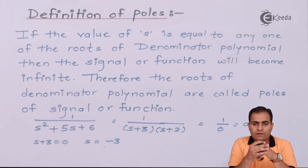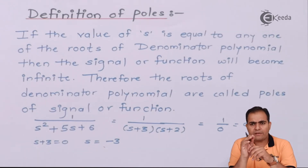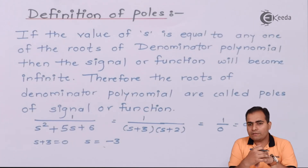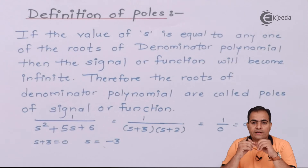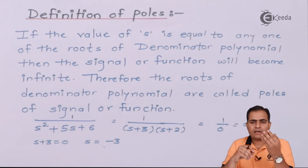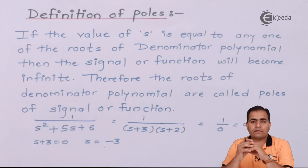In case of zeros, find the roots of the numerator equation. In case of poles, do the same with the denominator. Once you have the roots, equate each bracket to 0 and find the value of s. The s value from the numerator gives you the zeros, and the s value from the denominator gives you the poles of that function.